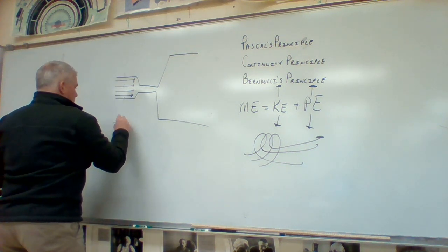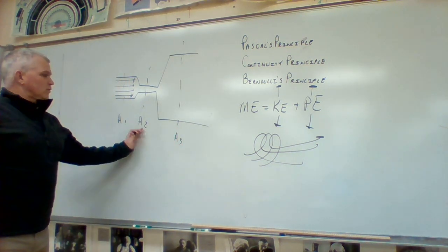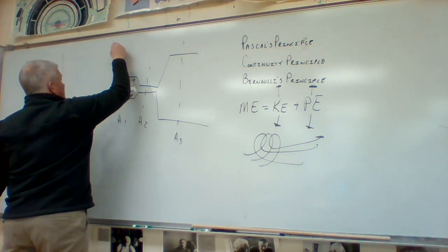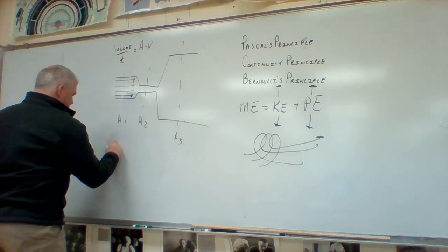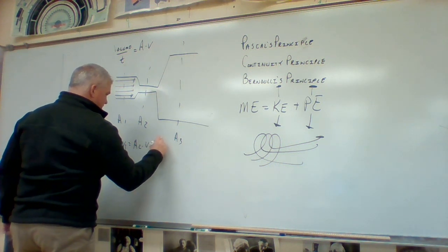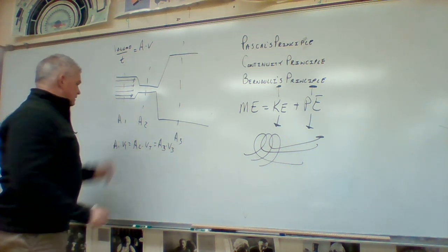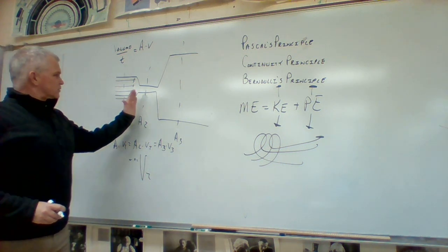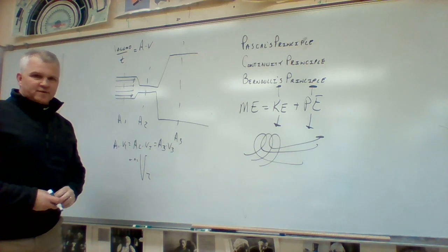This is area one, area two, and area three. When it goes from area one to area two, the volume flow rate has to stay the same. The volume flow rate — volume of water per unit time — equals area times velocity. So area one times velocity one equals area two times velocity two, which equals area three times velocity three. As area two gets small, velocity two has to get big.